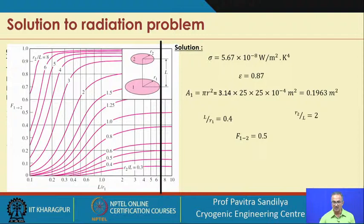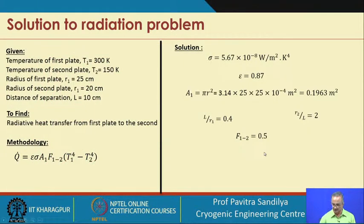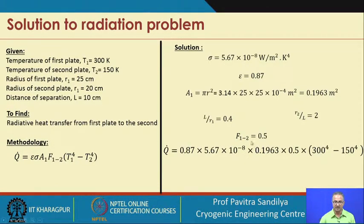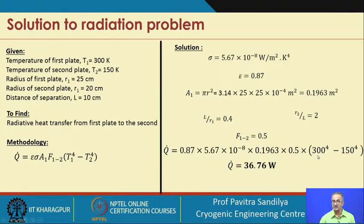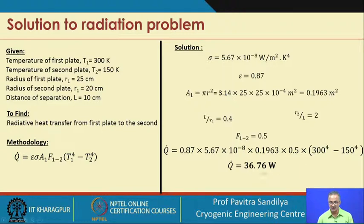On the shape factor chart, we locate L/R₁ = 0.4 on the horizontal axis, move straight up, then find the curve for R₂/L = 2, and read the corresponding value on the y-axis. The shape factor is approximately 0.5. Plugging all values into the radiative heat transfer formula — noting that the driving force is not simply temperature difference but the fourth power of temperature — we obtain a radiative heat flux of approximately 37 watt.